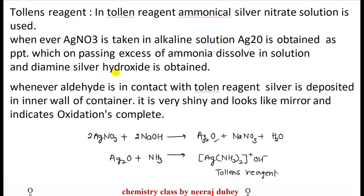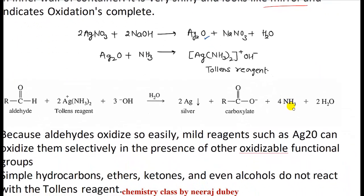When excess ammonia is passed, Ag2O dissolves and diamine silver hydroxide is obtained. Whenever aldehyde is in contact with Tollens' reagent, silver is deposited on the wall of the container — it is very shiny and looks like a mirror, indicating complete oxidation. Because of this silver mirror formation, this test is also called the silver mirror test.